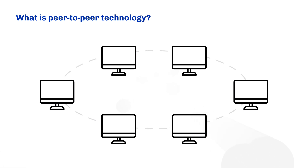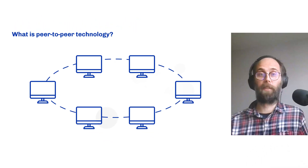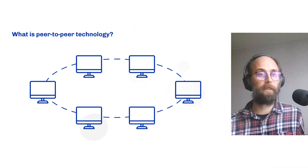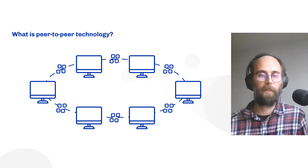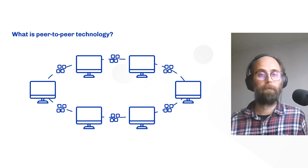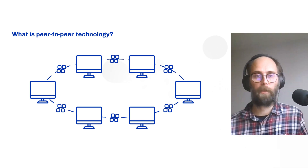We need to create connections between these computers and distribute information across them. The information being distributed in our case are blocks containing transactions that should flow through the system, making it available to all the peers. So the main point of it is actually data diffusion — we're trying to diffuse information across the network, which consists of individual connections and individual nodes connecting through that network.